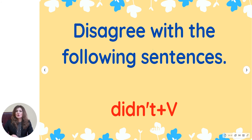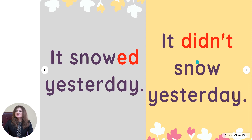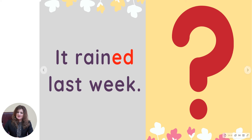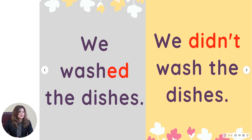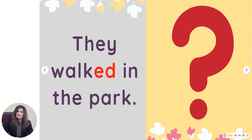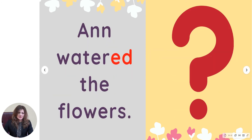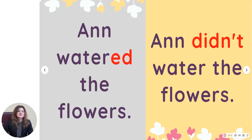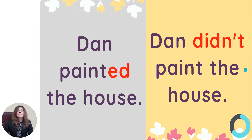We use 'didn't' plus the verb. Let's practice — disagree with the following sentences using the structure 'didn't + verb.' 'It snowed yesterday' → 'It didn't snow yesterday.' 'It rained last week' → 'It didn't rain last week.' 'We washed the dishes' → 'We didn't wash the dishes.' 'They walked in the park' → 'They didn't walk in the park.' 'She watered the flowers' → 'She didn't water the flowers.' 'They painted the house' → 'They didn't paint the house.'